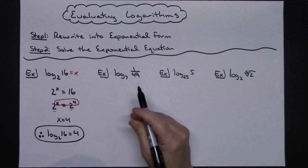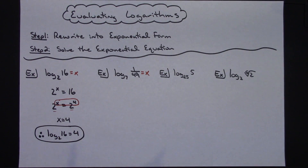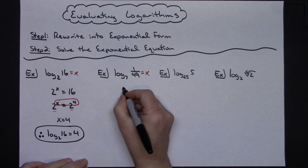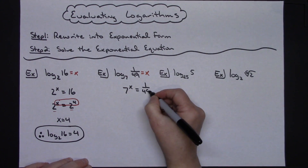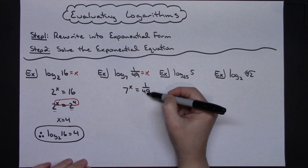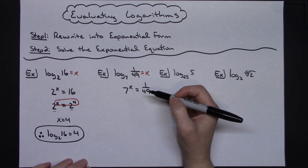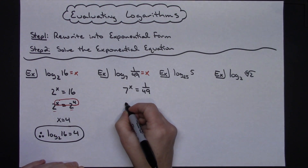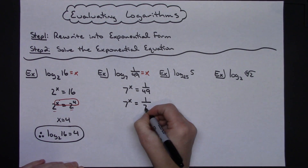Taking a look at the second example, I'll put a little "equals x" on the end. That helps me see what the exponential form is going to be. Step 1: rewrite into exponential form — 7 raised to the x equals 1 over 49. Now I'll think about that 49: can I write it as a base with a 7? Yes — I can rewrite 49 as 7 squared. So: 7 to the x equals 1 over 7 squared.